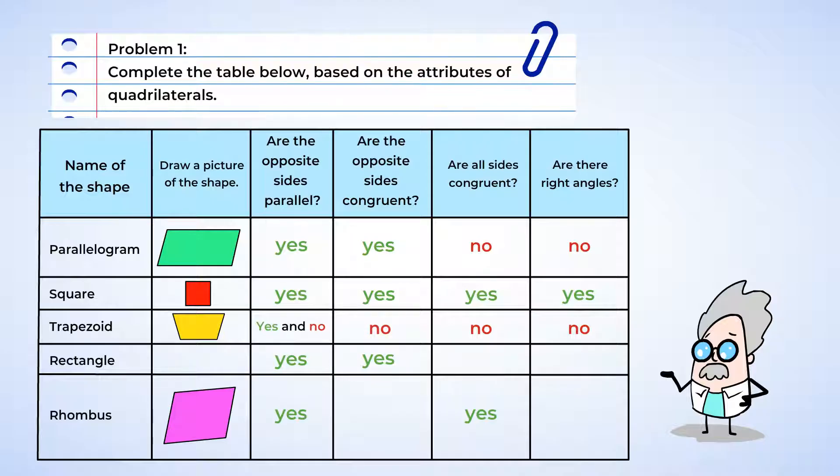Okay, now for a rectangle. Yours should look like a square, but two of the sides are longer than the other two. And that means all the sides are NOT congruent. But just like a square, there will be four right angles.